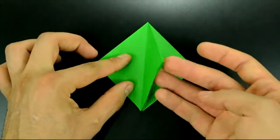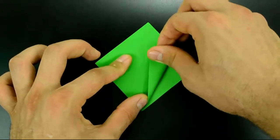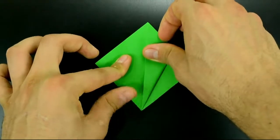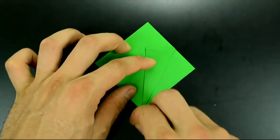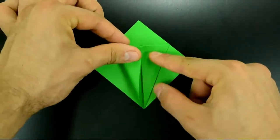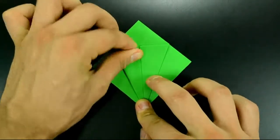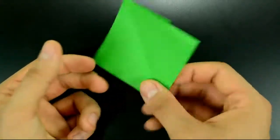And fold the bottom diagonal edge here to the center. Force the right side. Then the left. Turn over and repeat on the other side.